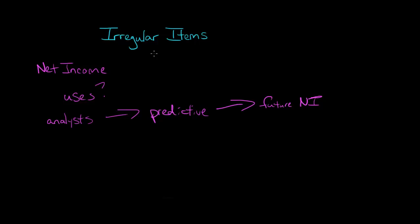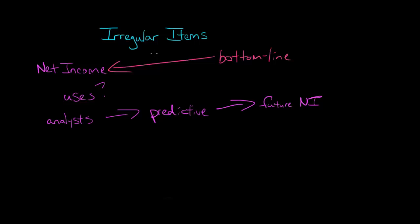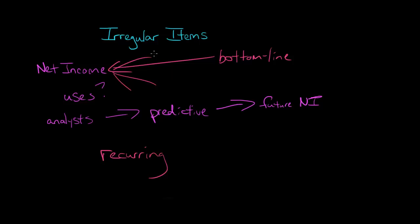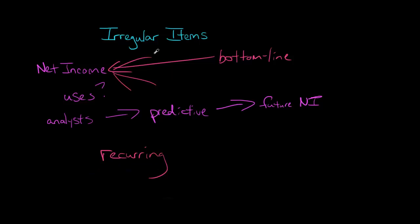The reason this is important in terms of irregular items is because a lot of different things go into net income. This is the bottom line. Gains, losses, revenue, expenses — all these different things go into net income. And so if we're trying to predict future net income, we might say, wait a minute. We've got all these different things going in there, and what we really want to do is focus on things that are most likely to be recurring, to happen again. We want to know what net income is going to be next year, so we want to take our net income today and focus on these recurring items — items that are likely to happen again in year two, year three, year four.